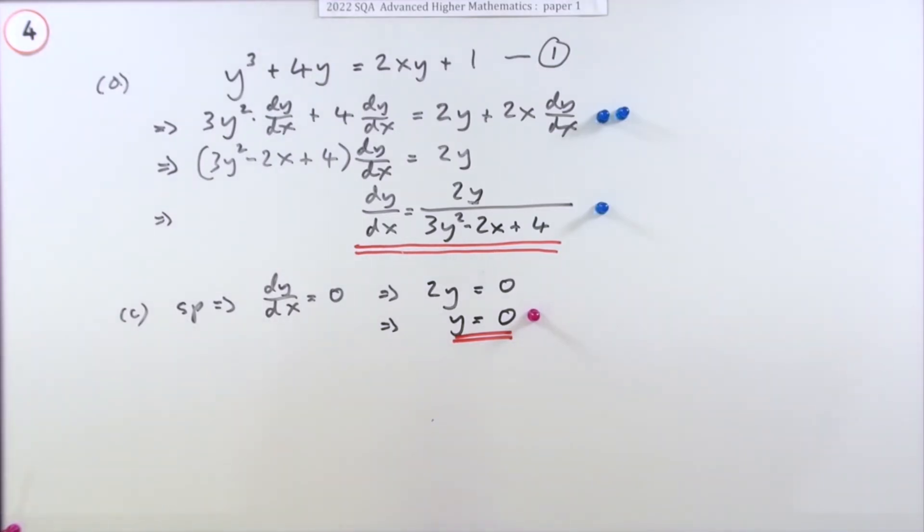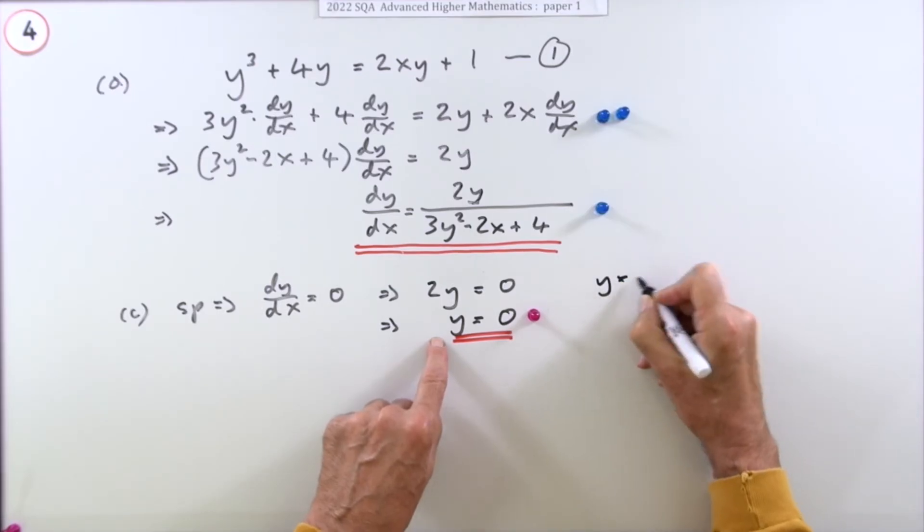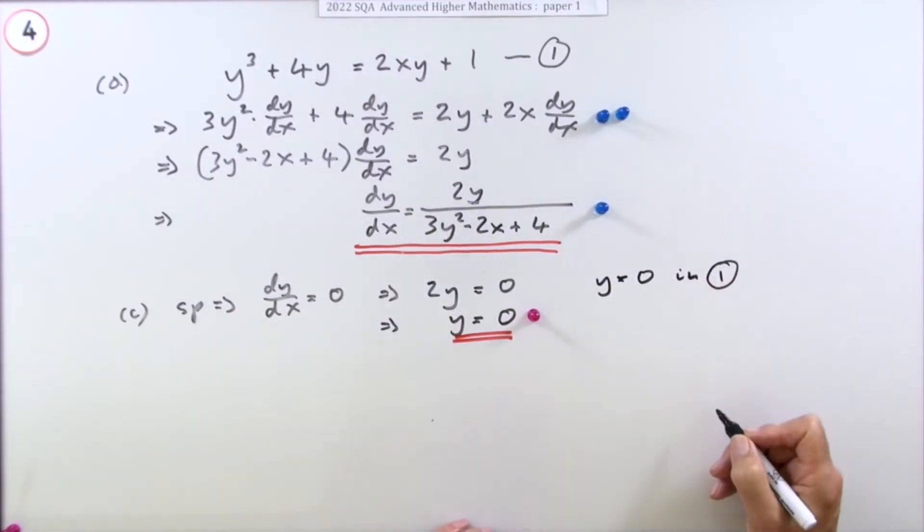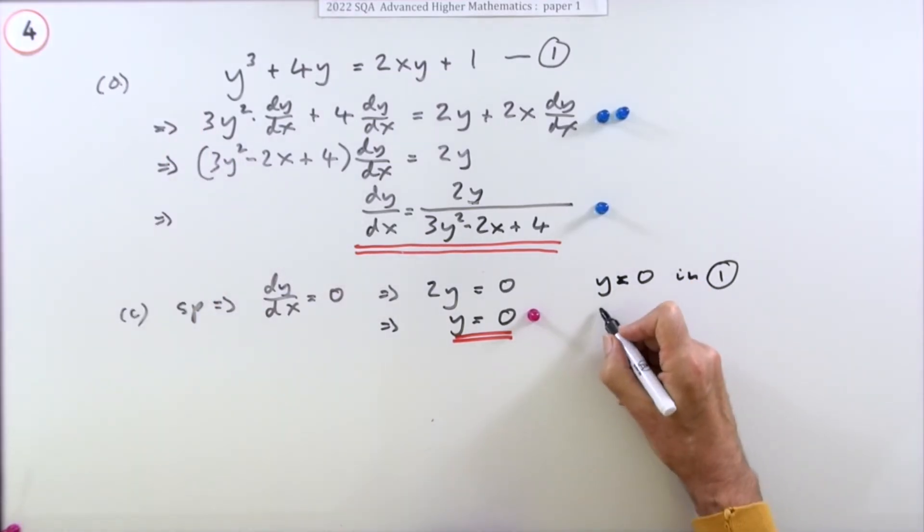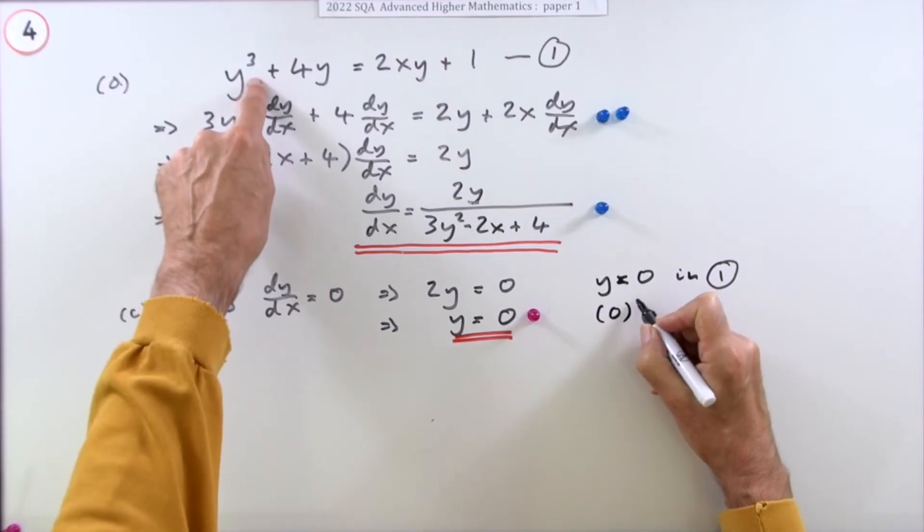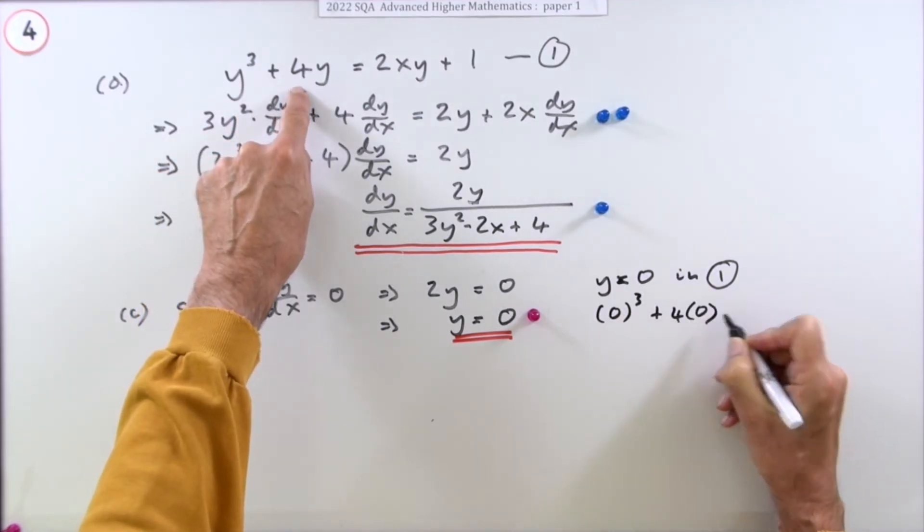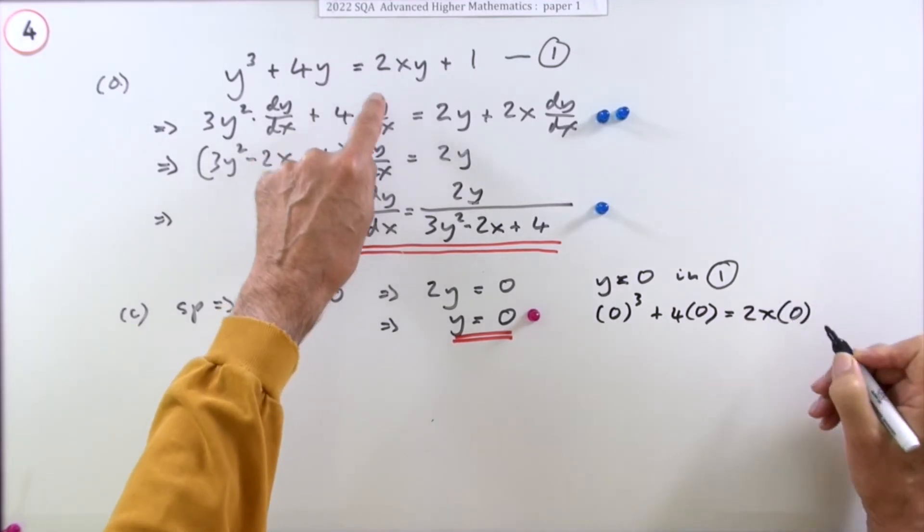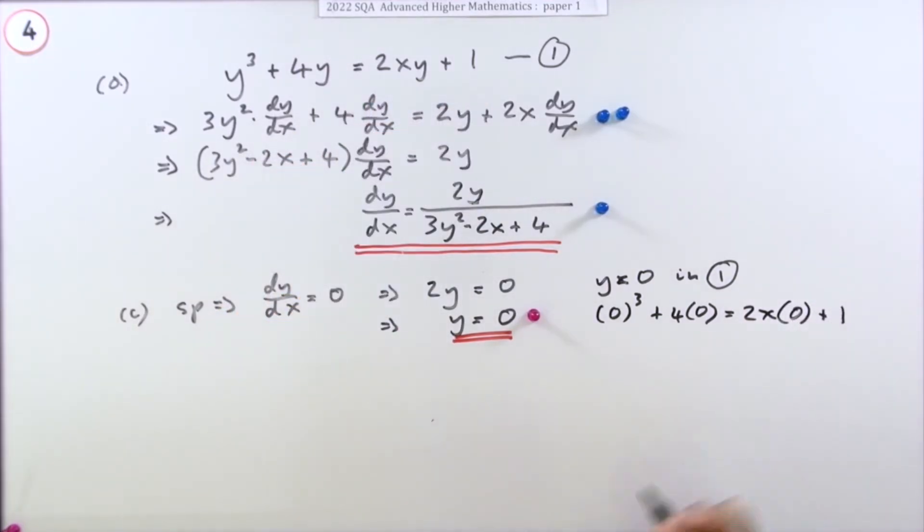I'll take y equals zero and put it into the coordinate equation. Pop that in: 0³ + 4(0) = 2x(0)—well that's a bit of a pest—plus 1.